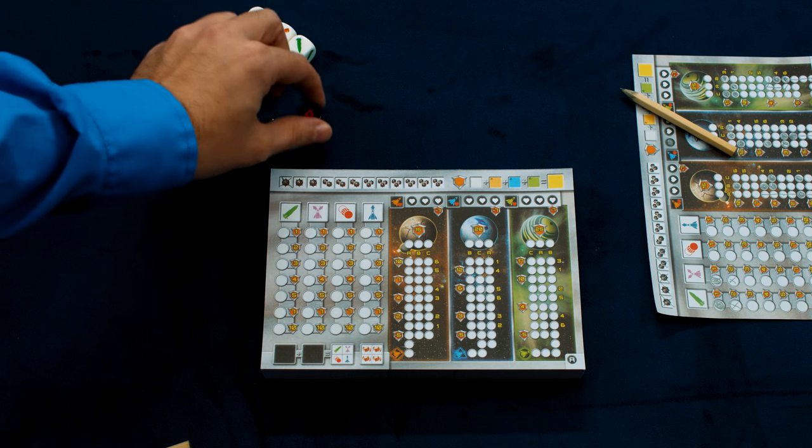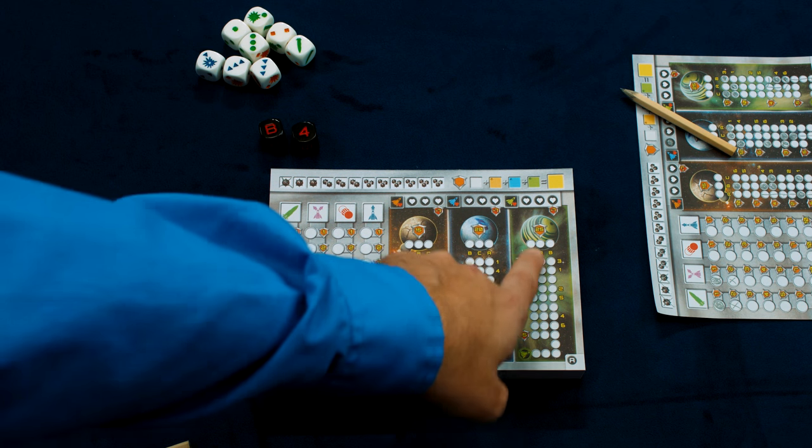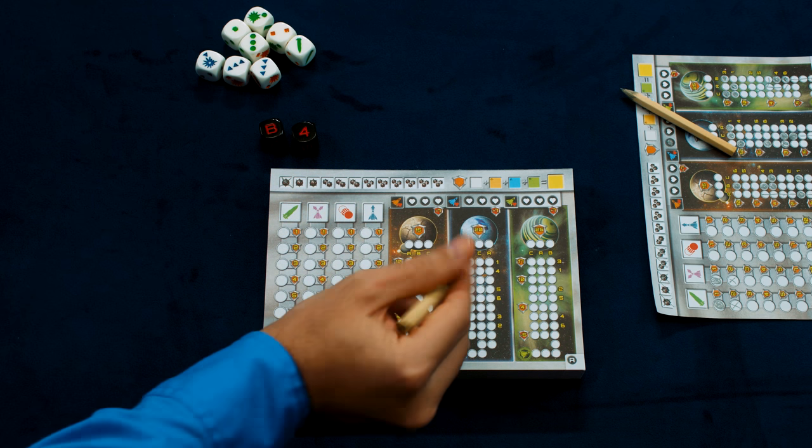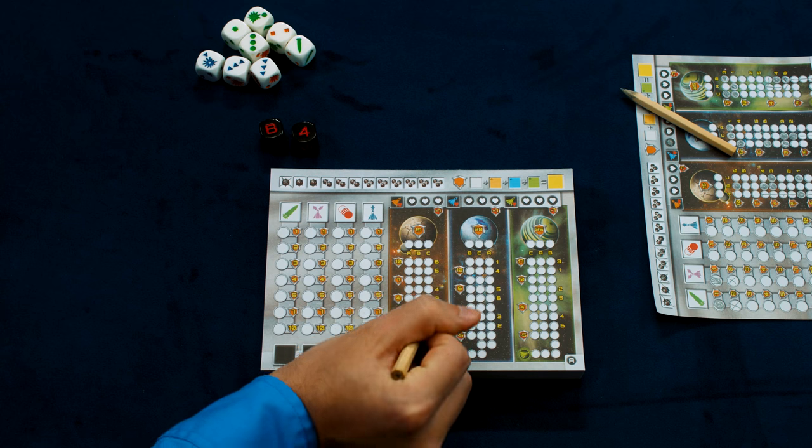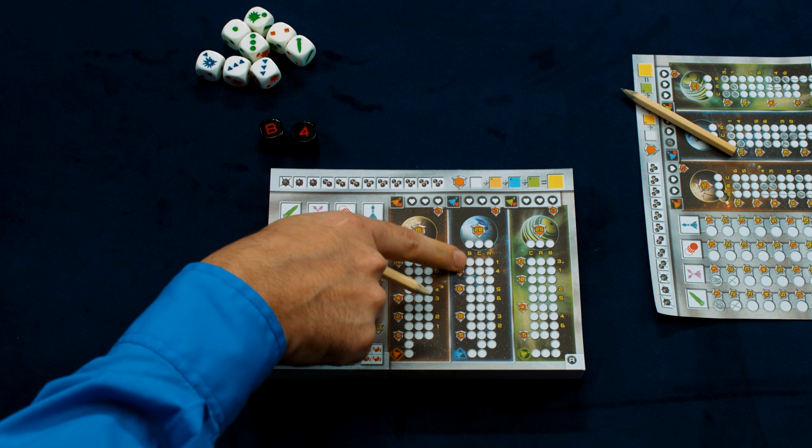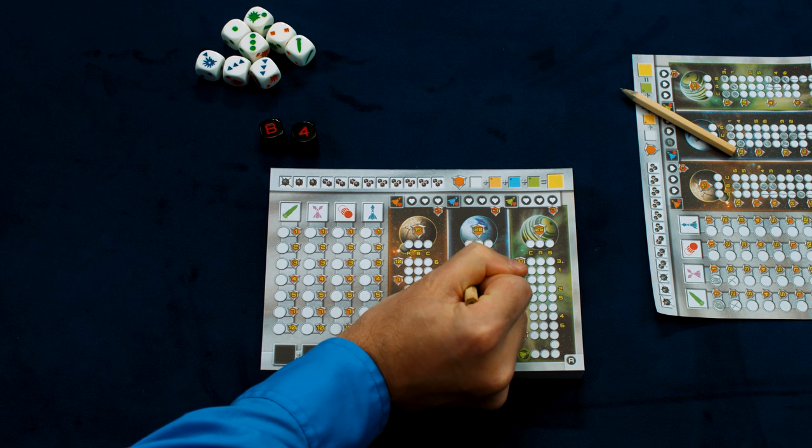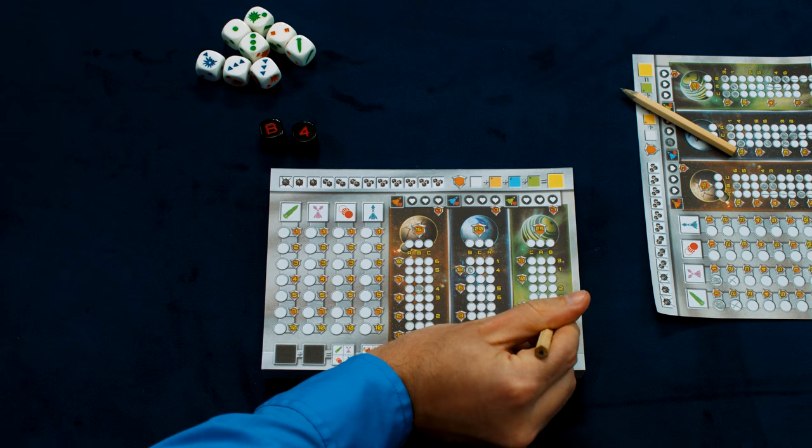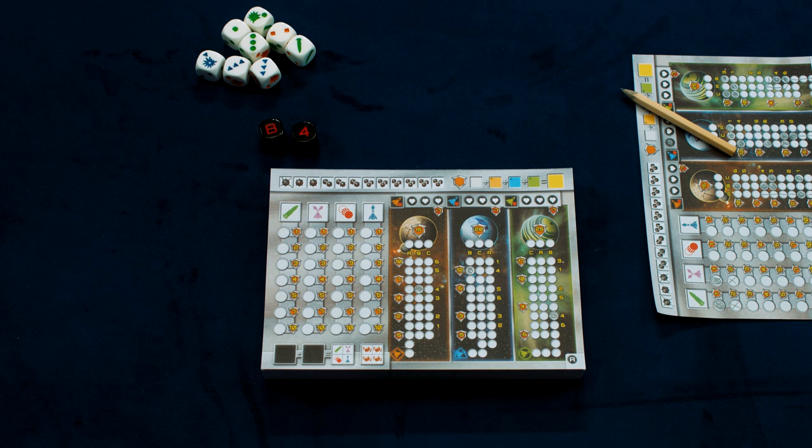These are going to have a letter and a number, which is going to equate to something on each of these tracks. And each player is going to mark off. So here we have a B4. So we'll take a B and a four and we'll fill that in for a mine. We'll take a B4 here, which is here, and we'll do a B4 here, which is here. So now those are impassable unless we have a technology to get through them.